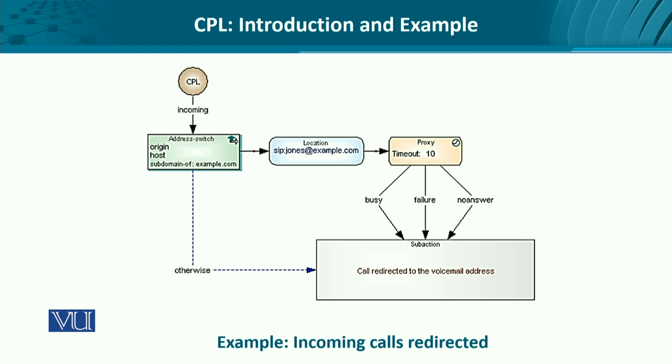Three actions are then performed. The location of the user determines if a certain user is present. If the user is available, the call would go through. But we are looking at redirection, so the caller is made to wait for, say, 10 seconds. Depending upon how the callee's unavailability is determined — whether it's busy, there's no answer, or the call could not get through — the voicemail is activated.